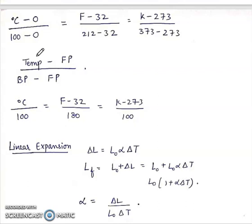Means the temperature minus freezing point at that scale upon difference of boiling point and freezing point. Delta C upon 100 is equal to F minus 32 upon 180 is equal to K minus 273 upon 100. Using this, we can convert any kind of temperature.